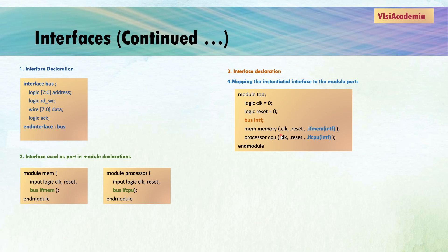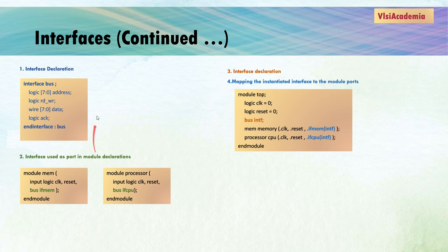One important point to note is that an interface can instantiate other interfaces as well. Another important point is that if there is any change in the address bus, you don't have to make changes in module Memory, module Processor, or the top module. You only have to make changes in the interface 'bus', and whatever changes you make there will directly reflect in module Memory, Processor, and top.